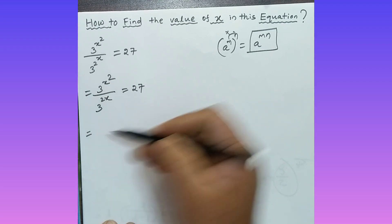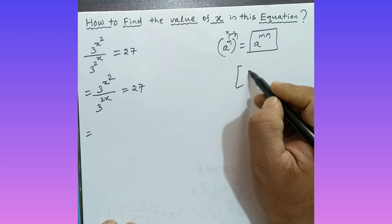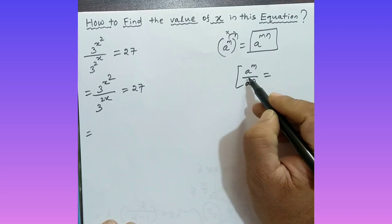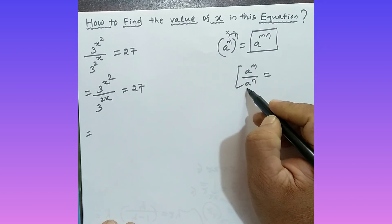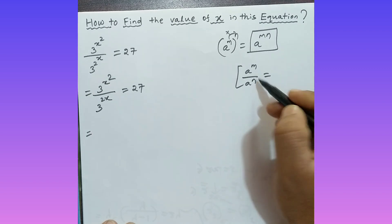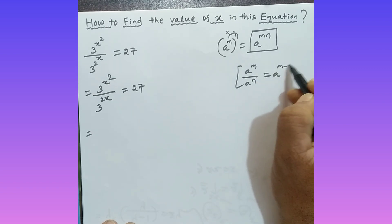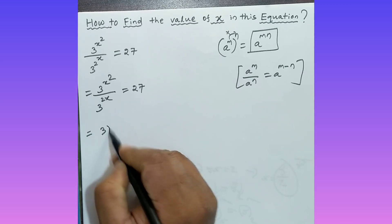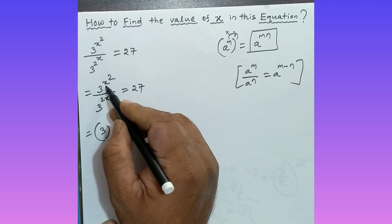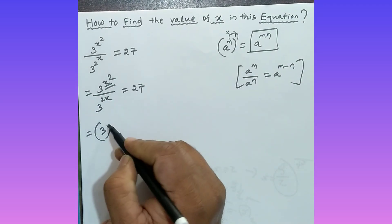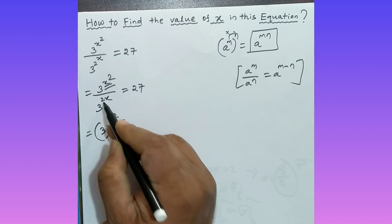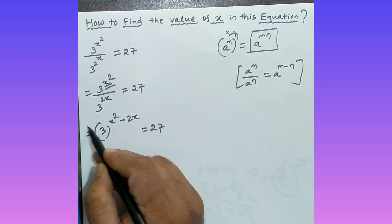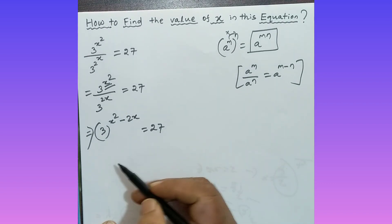Now apply another formula: when the base is the same and the powers are different, a to the power m divided by a to the power n equals a to the power m minus n. Applying this formula, we get 3 to the power x squared minus 2x.